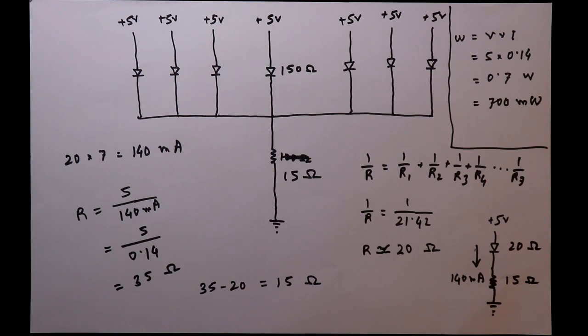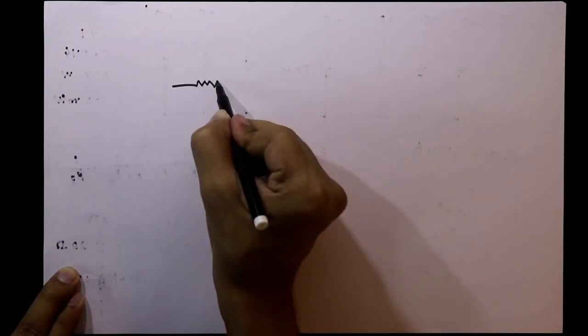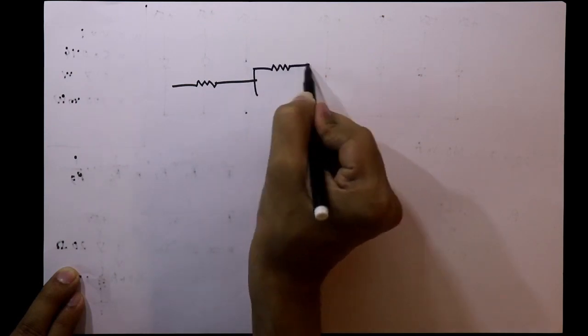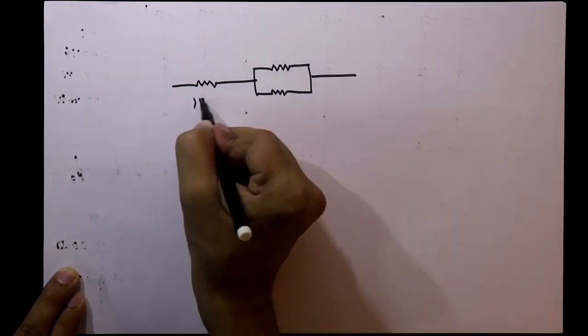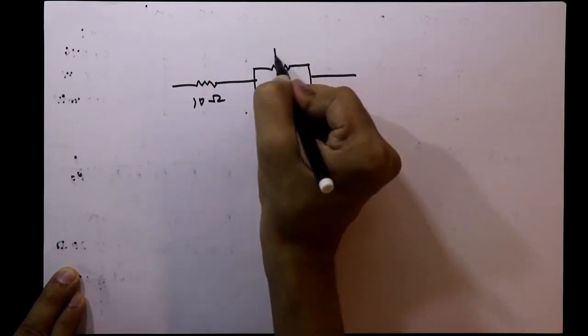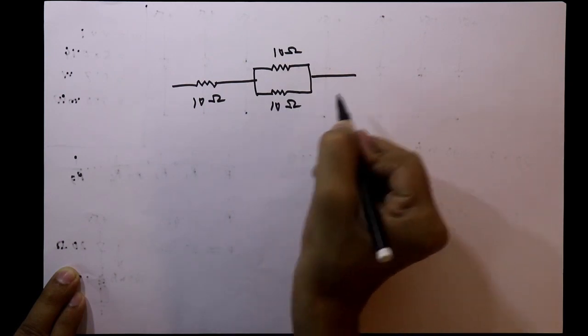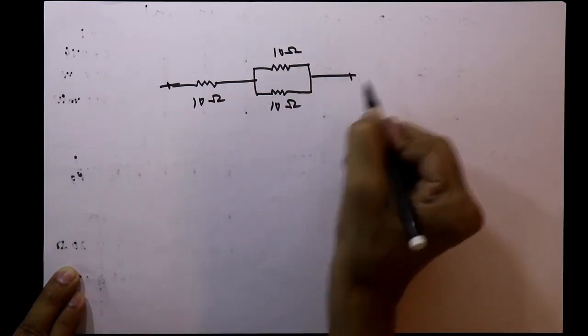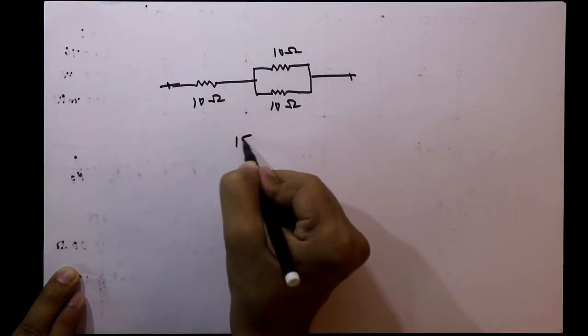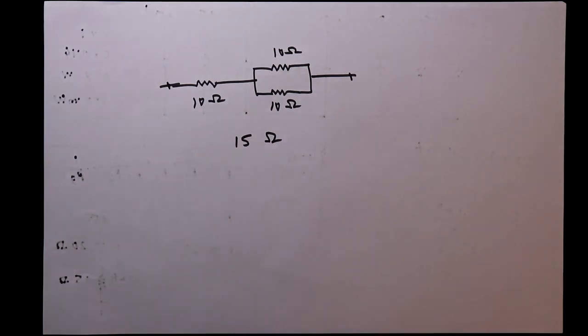Since I don't have a 15-ohm resistor of 2 watts, I'll make 15 ohms using 10-ohm resistors. I'll connect one resistor in series and then two more in parallel: 10 ohms in series with (10 ohms parallel 10 ohms = 5 ohms) gives 15 ohms total. So I need three pieces of 10-ohm, 2-watt resistors.